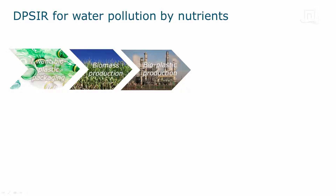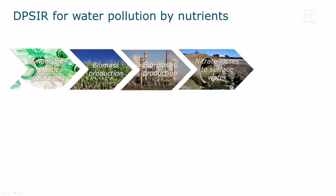The next element is the state. This refers to the state of the environment — for example, the pollution level of soil, air, and water, and all processes related to this pollution. An example of a state process in this particular case is the nitrate level in the surface water.